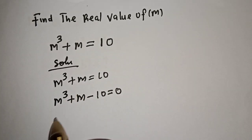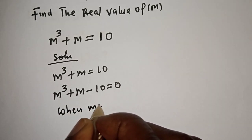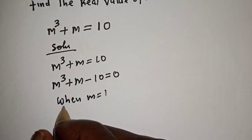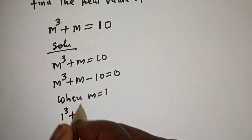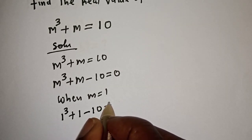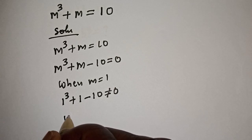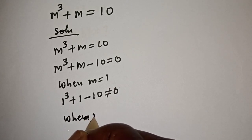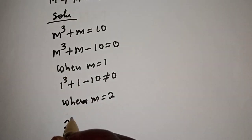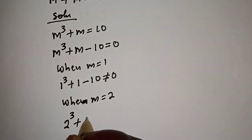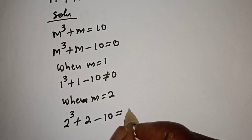First, let's check the factors. When m is equal to 1, m raised to the power 3 is 1 raised to the power 3, plus 1 minus 10 — this is not equal to 0. Now let's consider when m is equal to 2: m raised to the power 3 is 2 raised to the power 3, plus 2 minus 10, which is equal to 0.